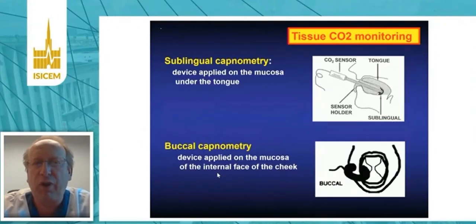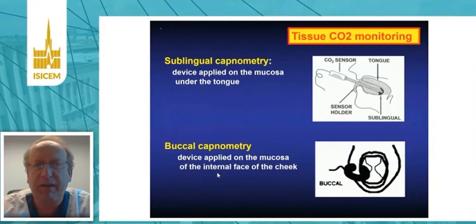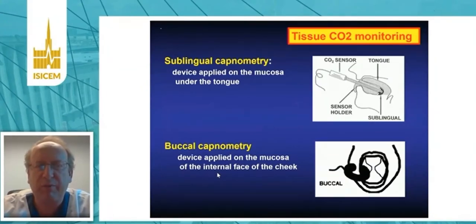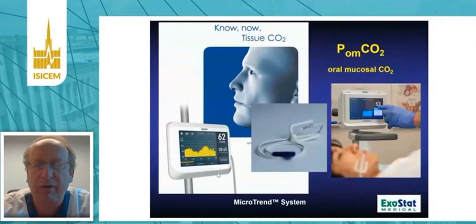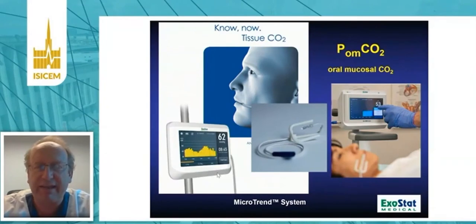We are now moving from sublingual capnometry to buccal capnometry. Sublingual capnometry has the disadvantage of being difficult to perform because movement of the tongue can interfere with measurements. It is probably easier to use buccal capnometry. The device is applied to the mucosa of the internal surface of the cheek, and industry has developed this kind of device; I hope that in the next few months we will be able to use this monitoring routinely.